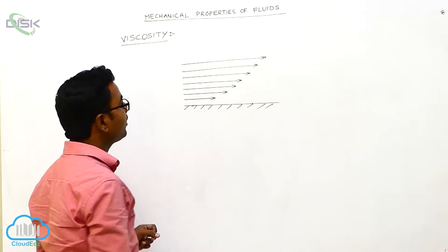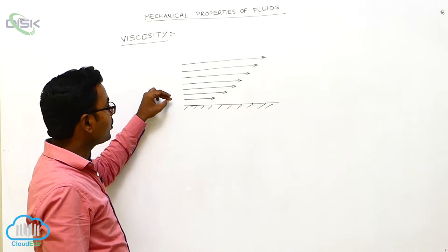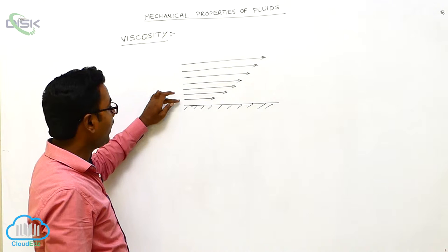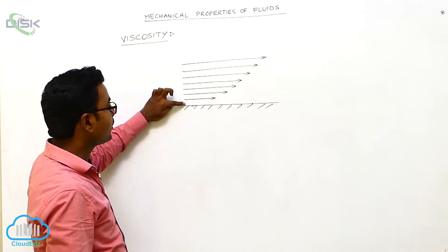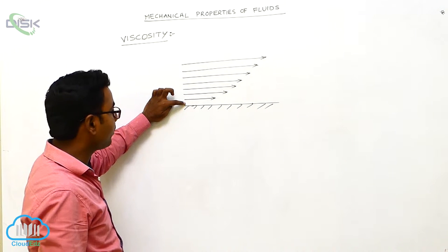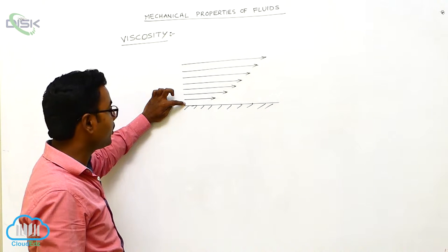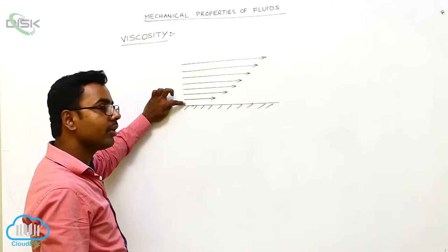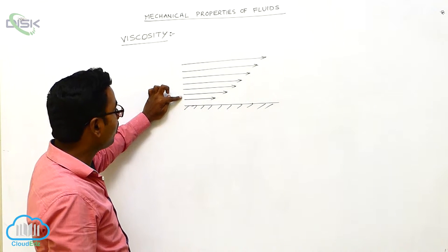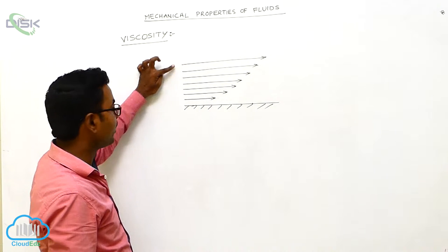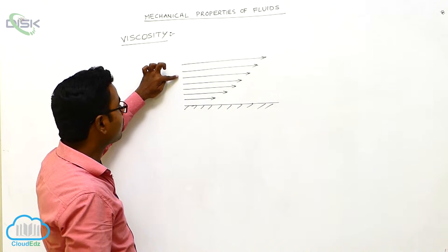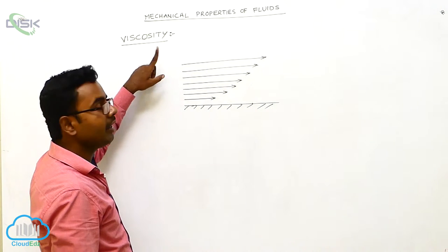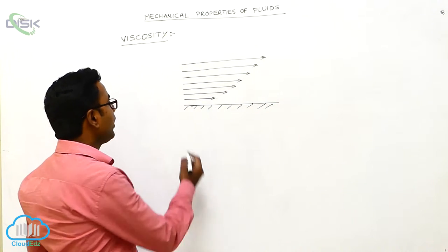These lines of increasing length show that the velocity of each layer gradually increases as we go up. The velocity of the layer in contact with the bottom surface — the ground — is always zero; it always remains at rest. As we go up, the velocity of the layers gradually increases, as shown by these lines of increasing length.